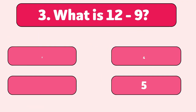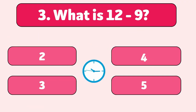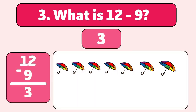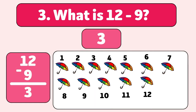What is 12 minus nine? The answer is three. We start with 12 umbrellas and let nine blow away. Let's count. One, two, three, four, five, six, seven, eight, nine. You're doing amazing.